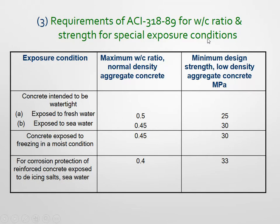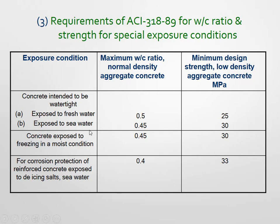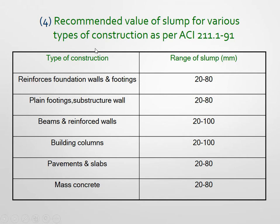Table 3 gives the requirements of ACI 318-92 for water-cement ratio and strength under specific exposure conditions — mild, moderate, severe, and extreme. These depend on the environmental conditions. The table specifies the maximum water-cement ratio for normal-weight aggregate concrete and minimum design strength. For example, for concrete exposed to fresh water only, the maximum water-cement ratio is 0.50 and minimum strength is 25 N/mm².